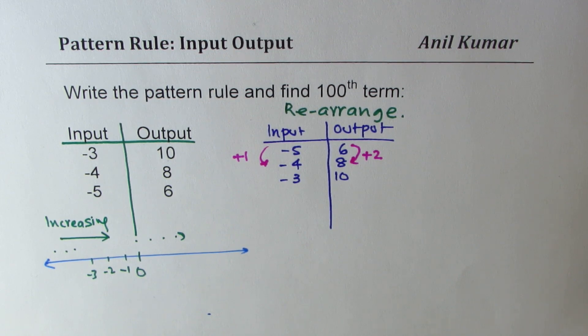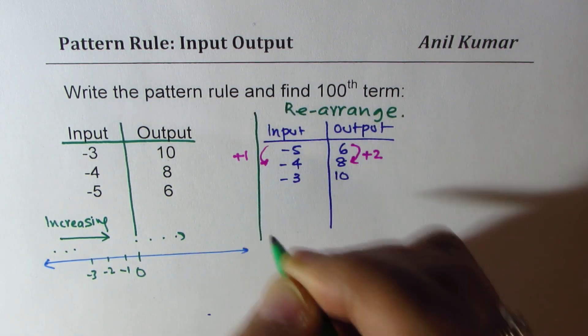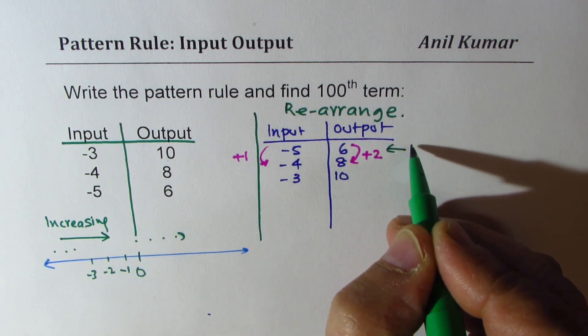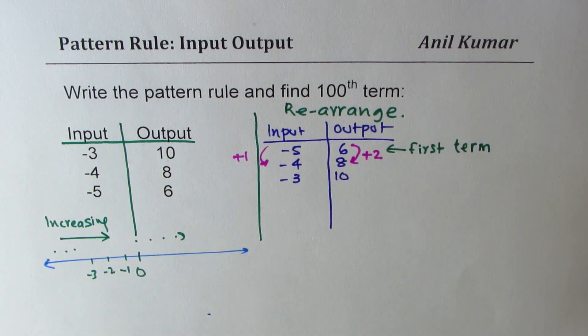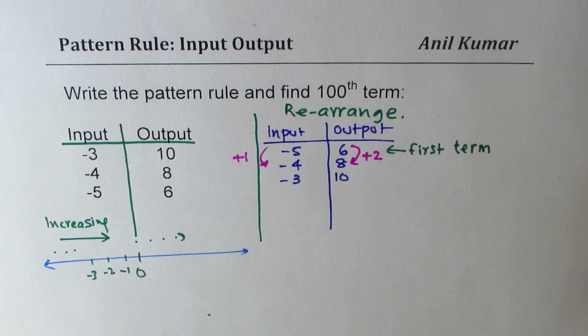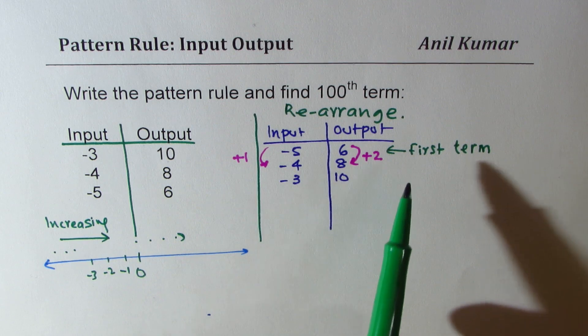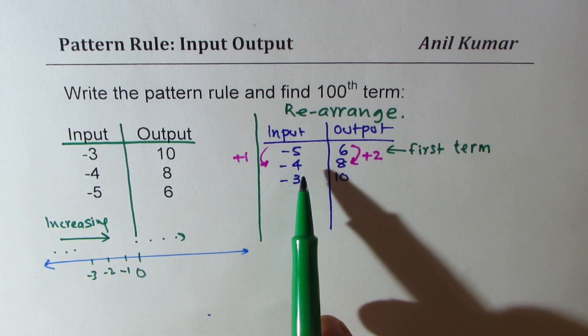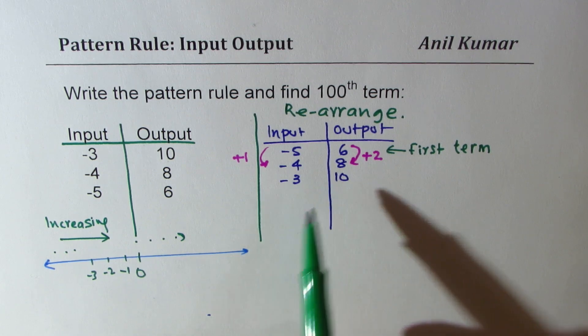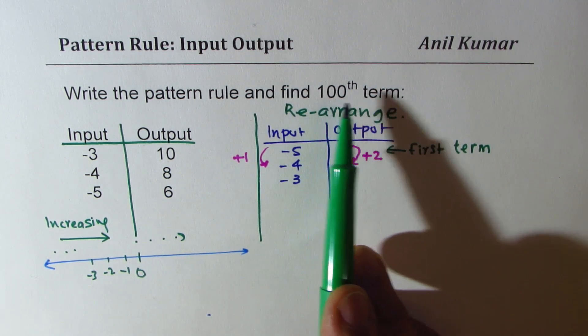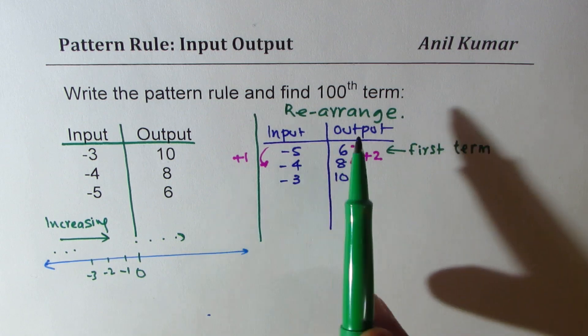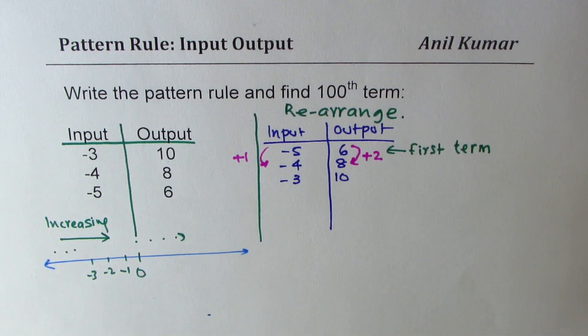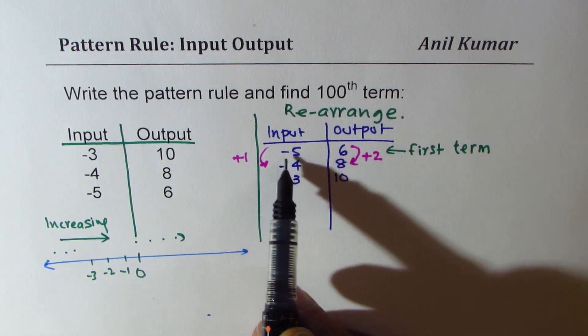We are increasing by two each time. And what is the first term here? First term is this one, which is six. So this is your first term. So now we have to get an equation which relates input to output. We want the hundredth term. We do not want the answer when input is hundred. So that way this question is very tricky.